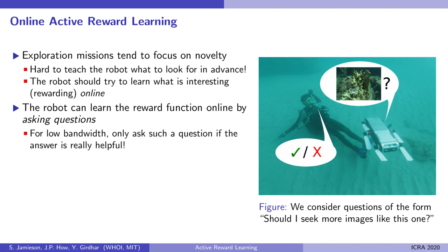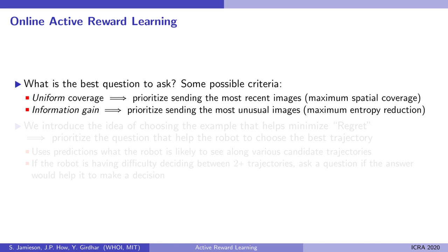In an environment where things are encountered that have never been seen before, the robot must communicate with the operator to determine which are worthy of closer observation. To do so, it sends the operator example images of various topics and asks them which ones are interesting. But in a low-bandwidth environment, the robot must carefully decide what to ask.